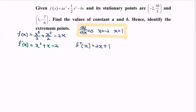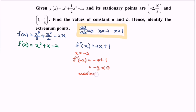Next, we find the extremum points by testing the critical values. Substituting x equals negative two into the second derivative: f double prime of negative two equals negative four plus one equals negative three, which is less than zero. So x equals negative two is a maximum value, and the point (-2, 10/3) is a maximum point.